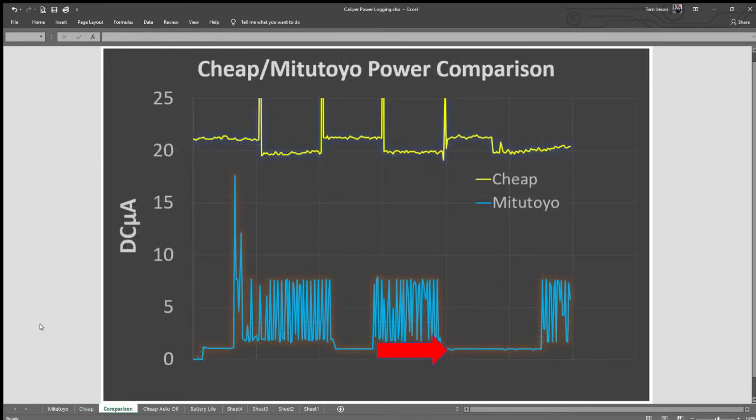Putting the performance both on the same chart, you can see that the Mitutoyos are only pulling 1 microamp when they're off, whereas the cheap calipers are pulling 20 microamps, 20 times more current than the branded ones.